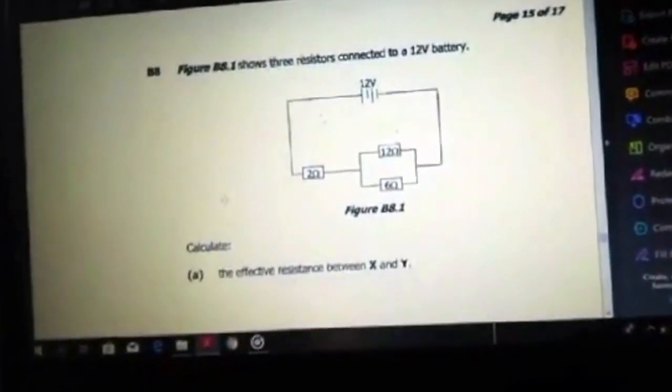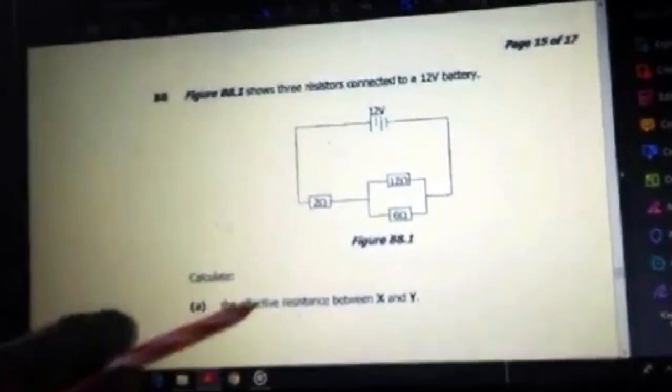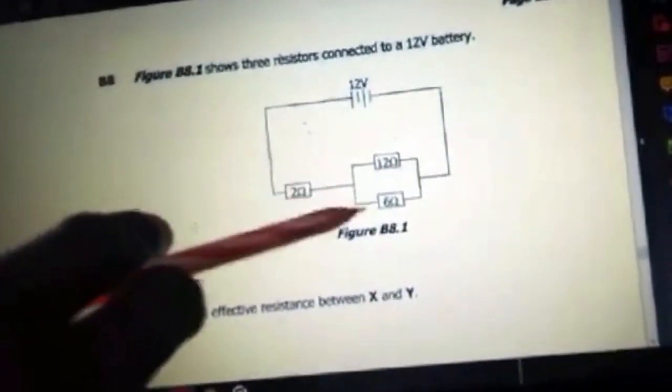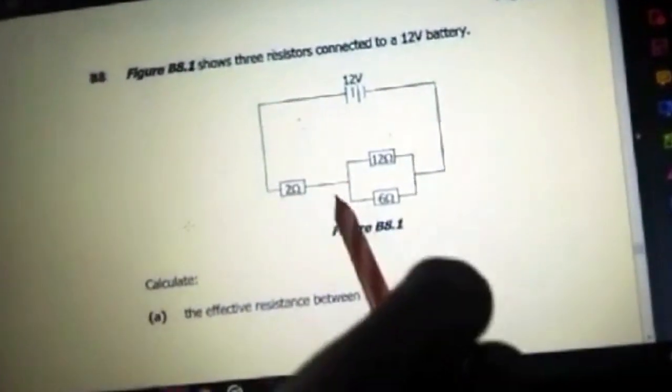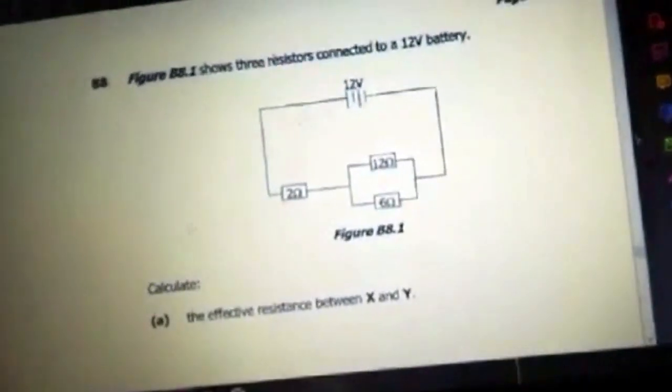Question 8 shows three resistors connected. Find the effective resistance between X and Y. There was an error here—they didn't label X and Y, but we are going to label X here and Y here. We're going to find the effective resistance between these parallel resistors.